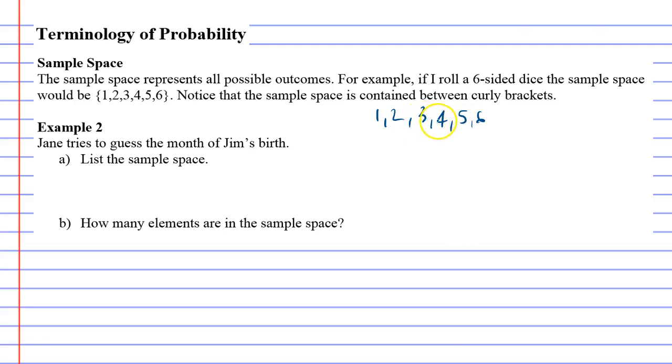When you're rolling a dice, when we write it down, we like to write them in curly brackets and write S equals, saying that the sample space is these numbers. So in Example 2, Jane tries to guess the month of Jim's birth. List the sample space.